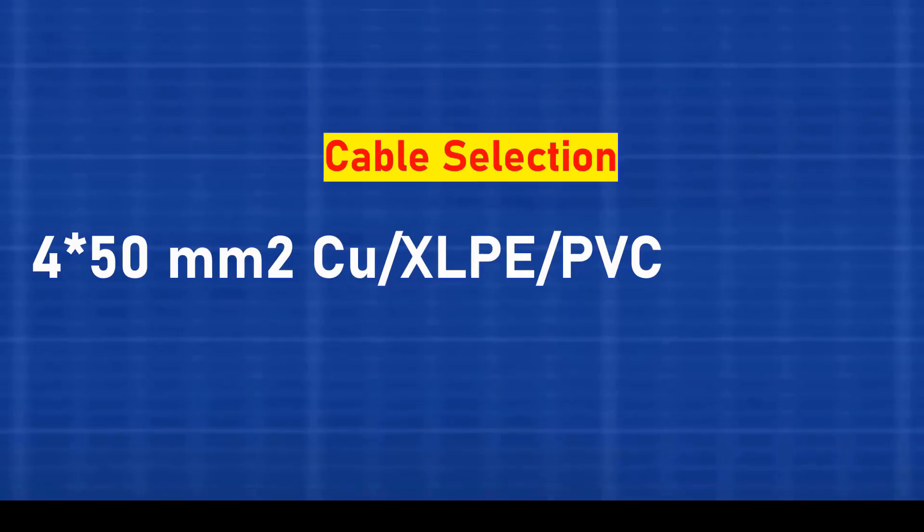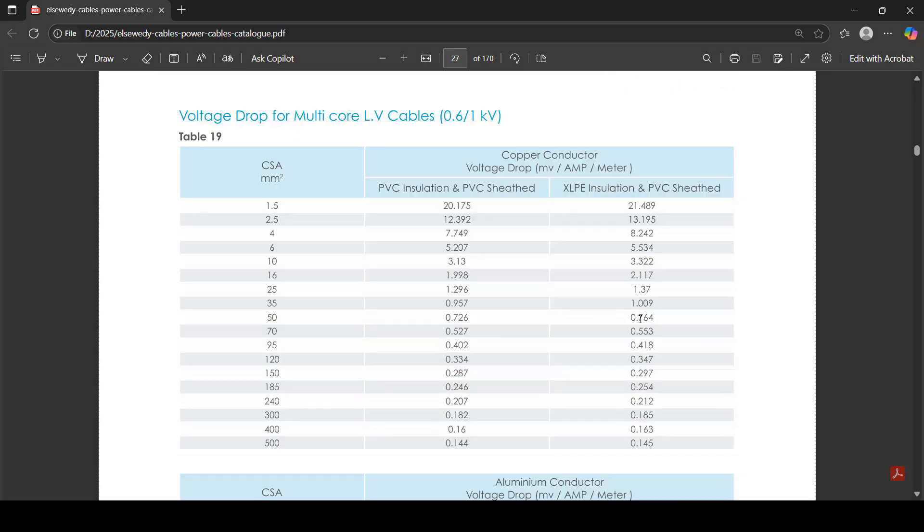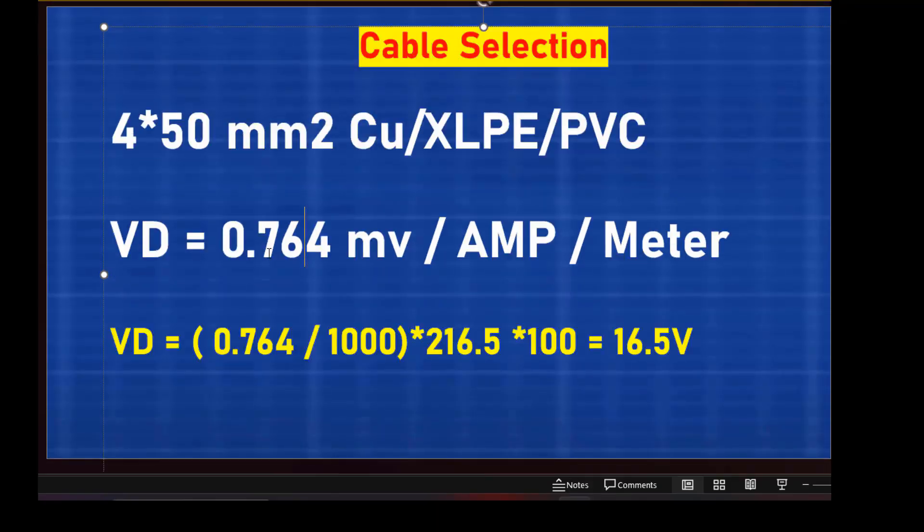Finally, we verify the voltage drop. From the catalog, the voltage drop for this cable is 0.764 millivolts per ampere per meter. We convert this and calculate. By applying the formula, we get voltage drop in volts equals drop per ampere multiplied by length multiplied by current divided by 1000. So, voltage drop equals 0.764 multiplied by 216 multiplied by 100 divided by 1000, which gives 16.5 volts.